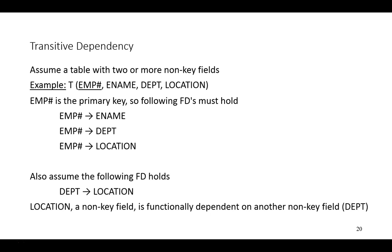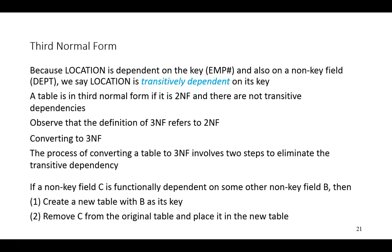Our definition of third normal form states that a table is in third normal form if it satisfies the requirements of second normal form and we do not have any transitive dependencies. So again, observe that the definition of third normal form refers to a lesser or earlier normal form. The location is dependent on the key and also on the non-key field of department — that's the transitive dependency.